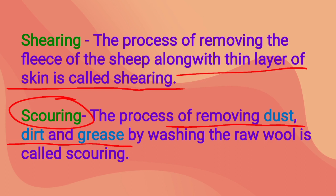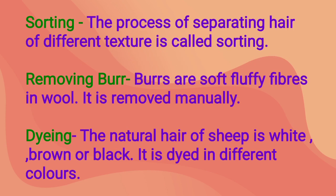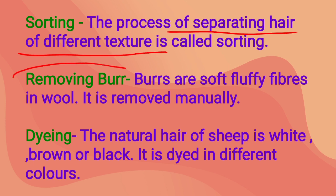After shearing, we wash the removed hair. The third process is scouring — removing dust, dirt, and grease by washing the raw wool. Then comes sorting, the process of separating hair of different textures, because all hair is not of the same type. After sorting, we remove burr — the soft fluffy fiber that appears on the wool, similar to the fluffy pills that appear on your sweaters after a few days of wearing.